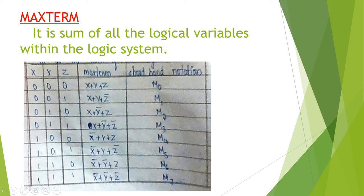What is the difference between minterm and maxterm? Minterm is the product of all the logical variables; maxterm is the sum of all the logical variables. In minterm, zero means x-bar. In maxterm, zero means x. That is the difference.